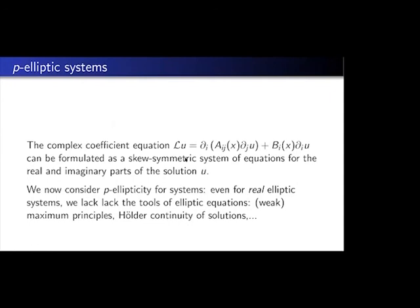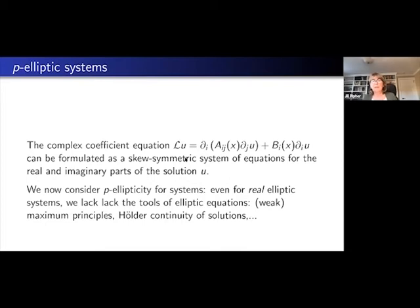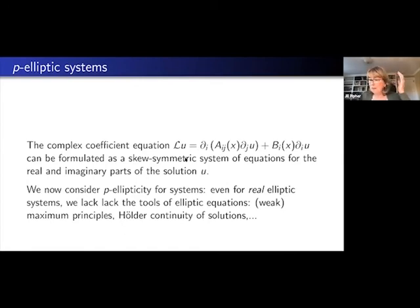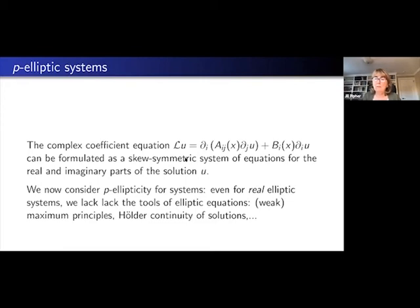Now I want to leave a little time to say a few things about systems. A complex coefficient equation is also a skew-symmetric system of real equations, by looking at the equations that the real and imaginary parts of u satisfy. So what we're now going to consider is P-ellipticity for systems — even for real systems — because even in the case of real systems, we don't have the tools we have for elliptic equations. We don't have maximum principles, Hölder continuity, et cetera. This lack of tools inspires one to look for structural conditions under which you can solve some of these boundary value problems.